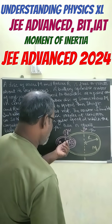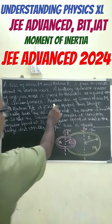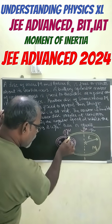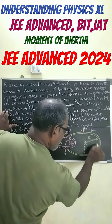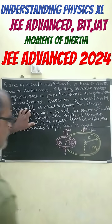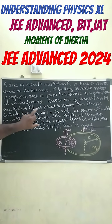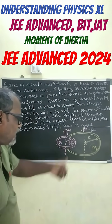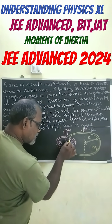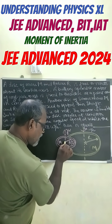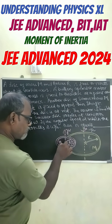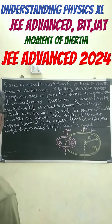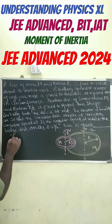Another disk of the same mass M and radius R/2 is fixed to the motor's thin shaft. The motor is placed at the circumference, and the torque is applied at the center of the system.